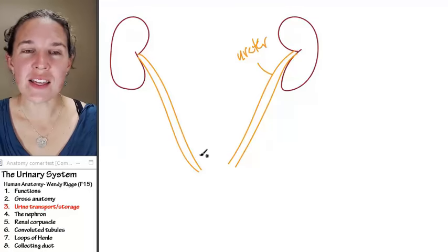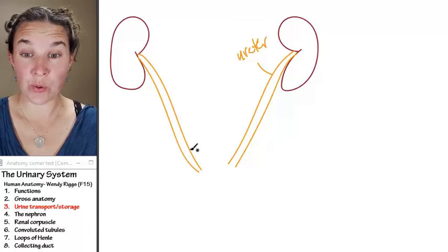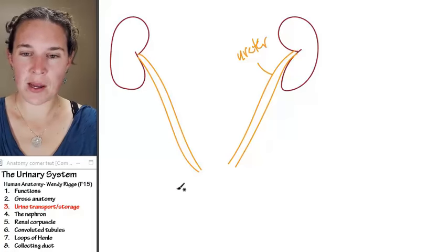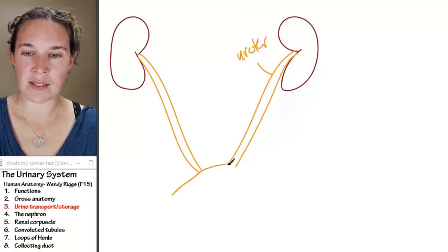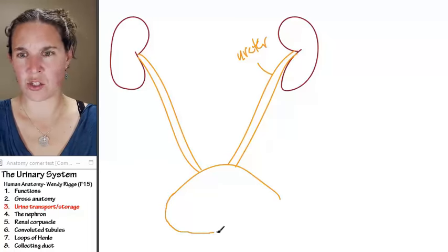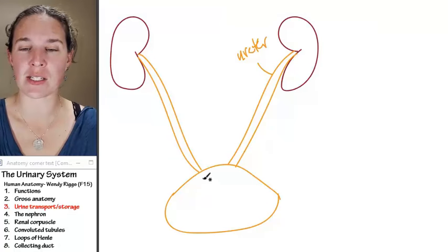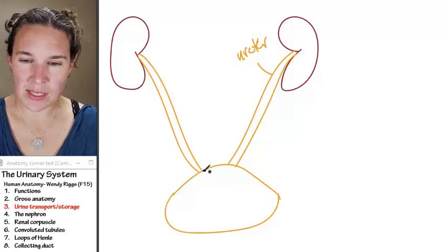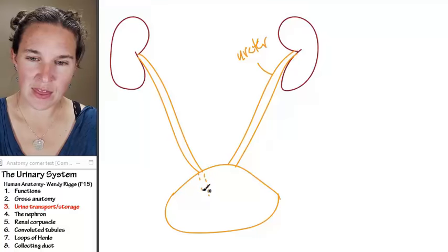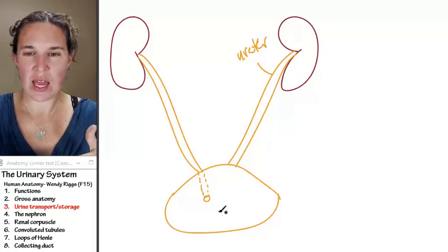Where is the ureter taking the urine? To the bladder. I have to draw this. I'm going to draw my bladder like this. And we'll look at where a bladder is located in the body in just a second. I'm drawing it like this because what I want you to see is that the ureters — there's a place in the bladder where the ureter opens.